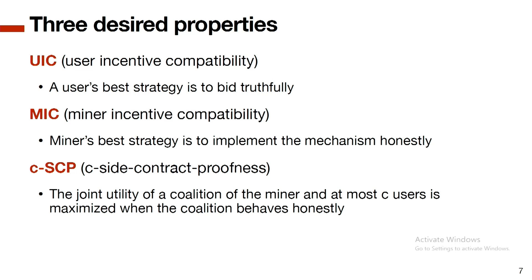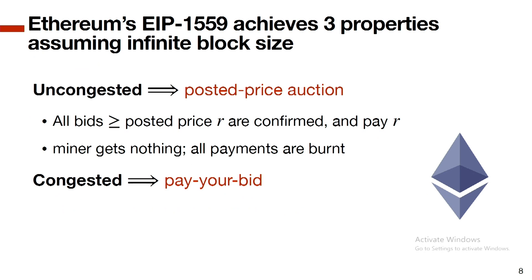The state of the art: EIP-1559 works well assuming infinite or unlimited block supply, running as a posted-price auction with a fixed price r — if your bid is higher than r you pay r. The key point is the miner gets nothing; all payment must be burned. However, the problem is when the network is congested, demand exceeds supply and EIP-1559 reduces to pay-your-bid like Bitcoin, which is not UIC.